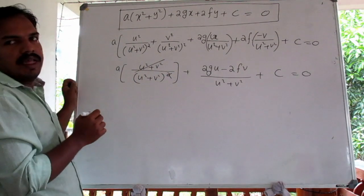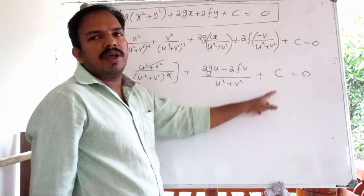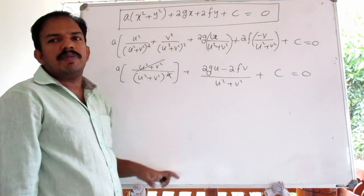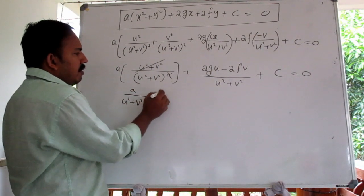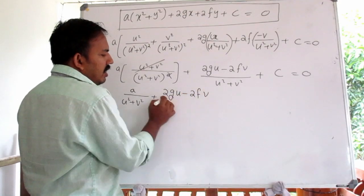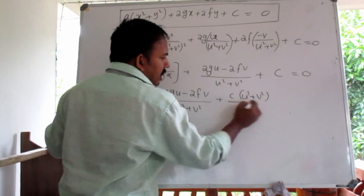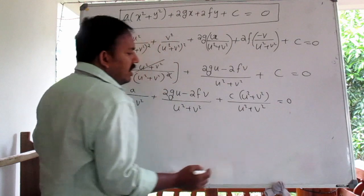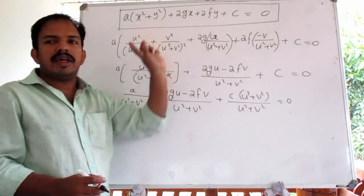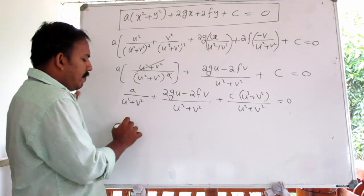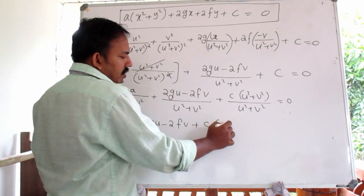Simplifying, we add u² + v² terms. This reduces to: (u² + v²)/(u²+v²) + 2gu − 2fv divided by u²+v², plus c, equals zero. Multiplying through by u²+v² gives a general equation in u and v.